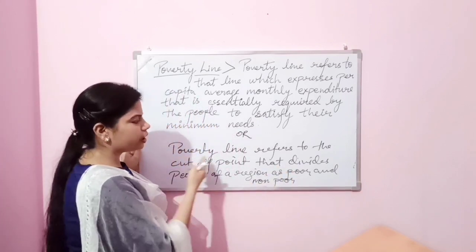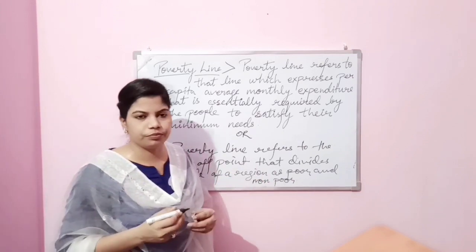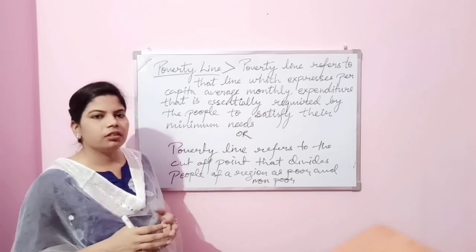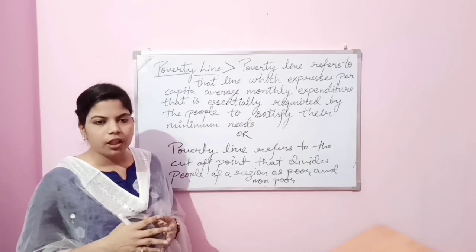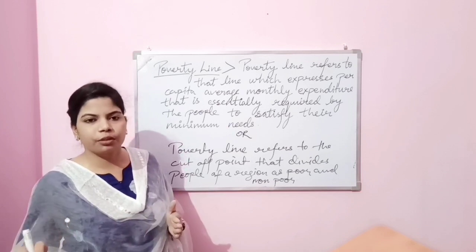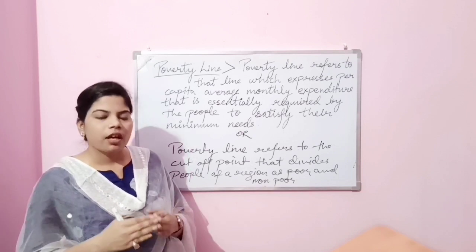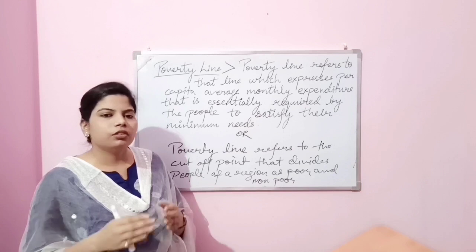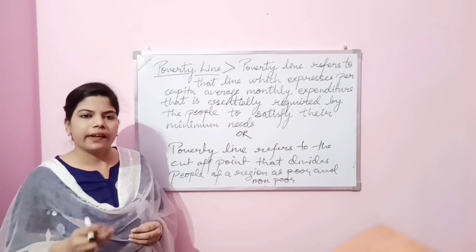We can also say that poverty line refers to the cutoff point that divides people of a region as poor and non-poor. For example, if we assume one thousand rupees as a monthly consumption expenditure cutoff point for a person — if the person is not able to secure that amount, they will be considered below poverty line, and those able to secure more than one thousand rupees will be considered non-poor.